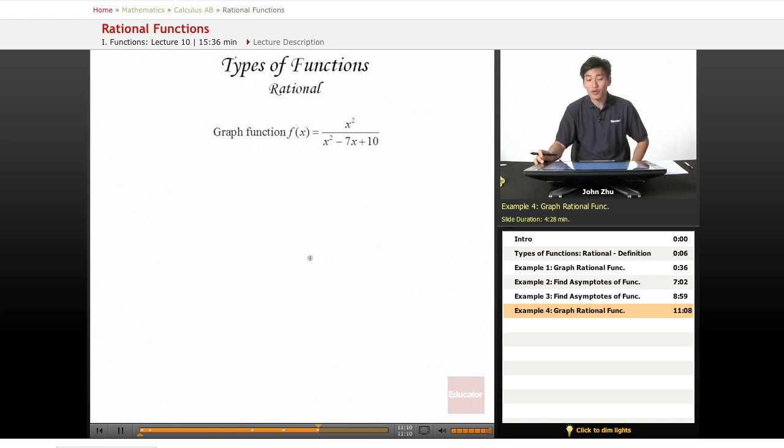And finally, let's do another graphing example of graphing a full rational function. So first, right away, let's look for some zeros.